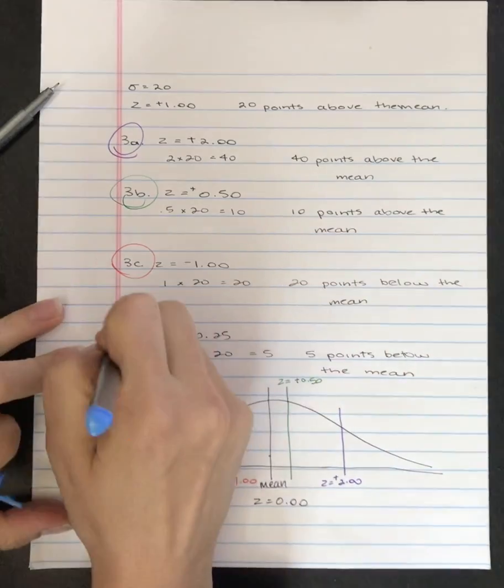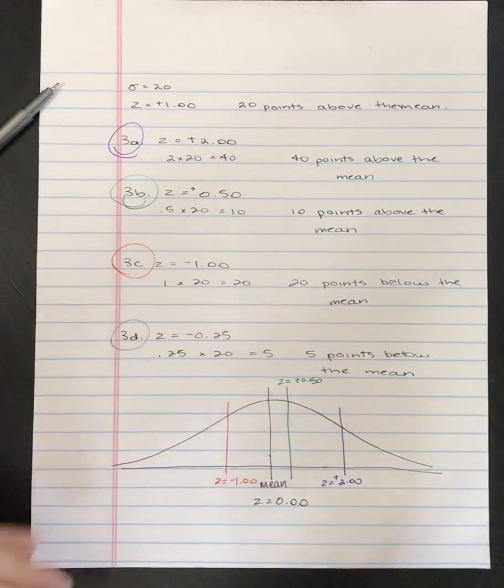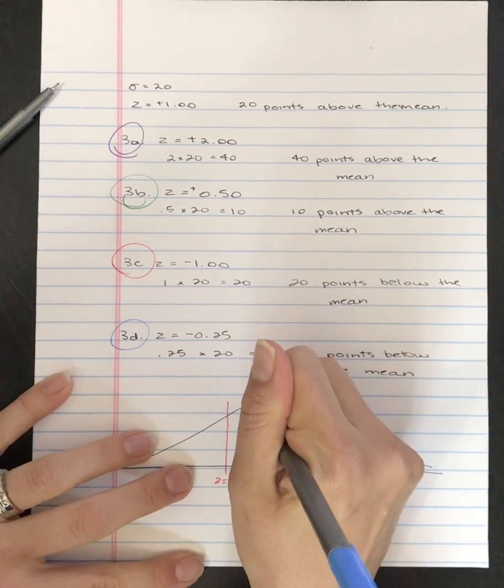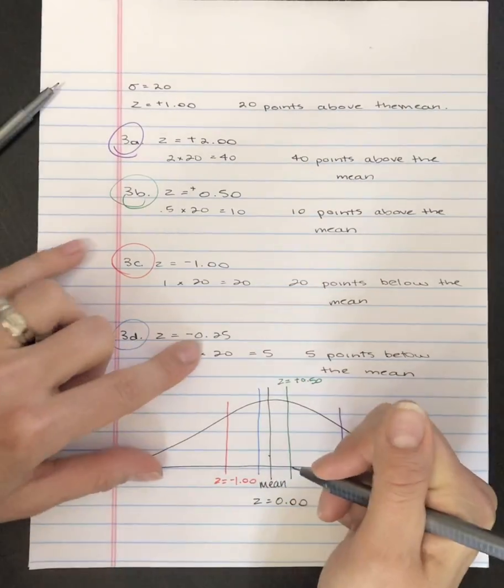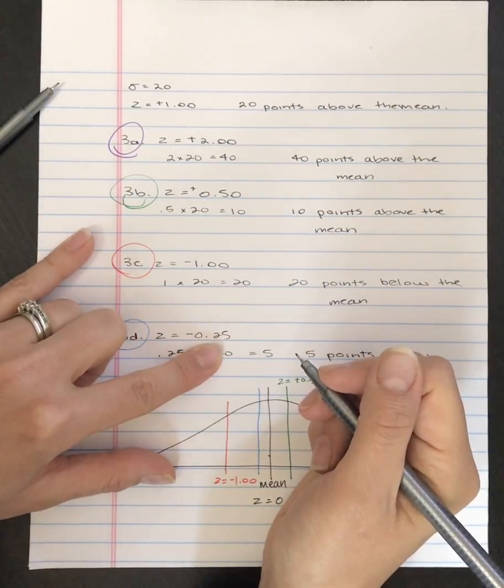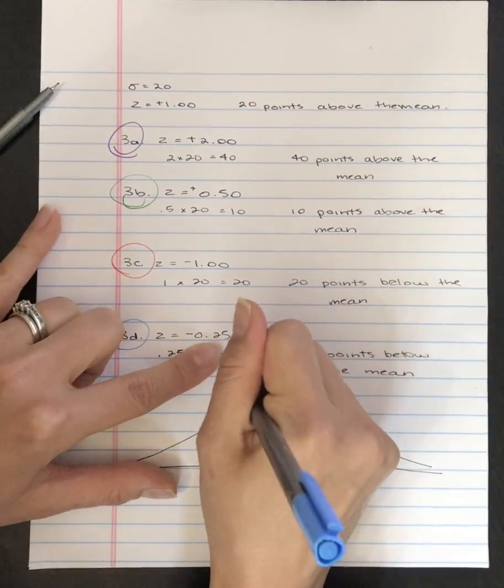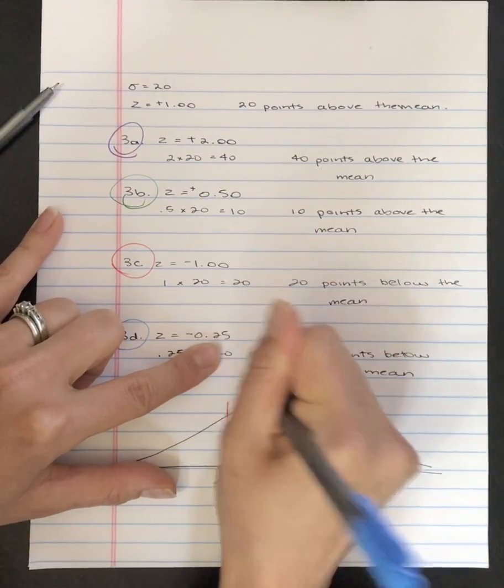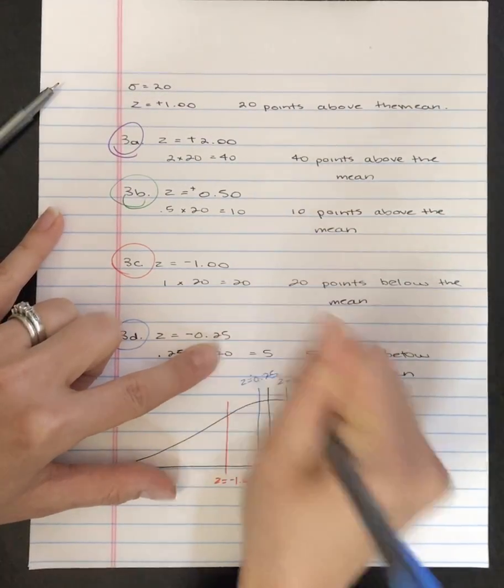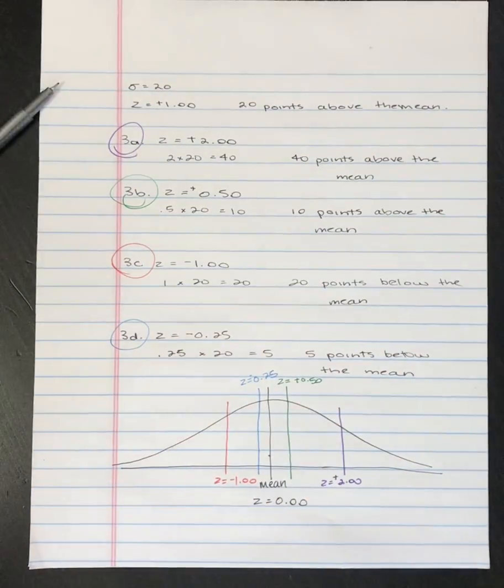And then this d is in blue. And it's going to be close to the mean because it's only 0.25 standard deviations. And it's a negative. So it's negative 0.25.